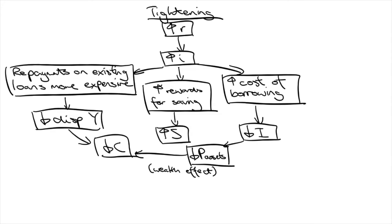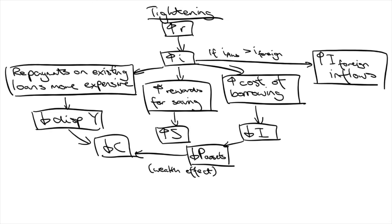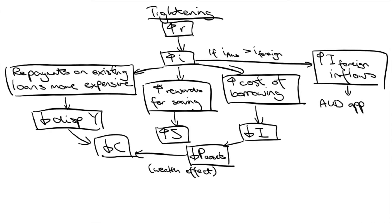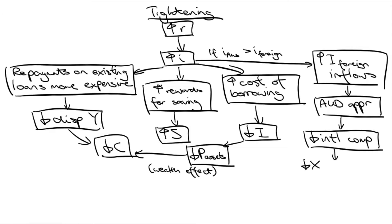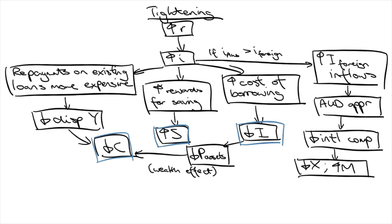Interest rates also impact the international sector. If Australian interest rates are higher than those of other countries, foreign investors will shift their funds into Australia for the higher return. This causes the Australian dollar to appreciate and Australian manufacturers to lose international competitiveness, leading to lower export volumes and increased imports. These symbols might look familiar — if you're in Year 11, you'll recognize these as injections and leakages in the circular flow of income. Tightening monetary policy leads to less injections and more leakages, causing a contraction in the economy.